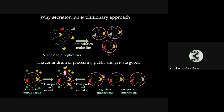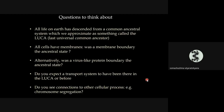You cannot have a completely closed system in life, so by definition you need a semi-permeable system. The moment you talk about a semi-permeable system, you're confronted with the problem of secretion and transport. Moreover, any such early system of life would not have been an island — it would undergo agonistic interactions: cooperative with kin and antagonistic with non-kin.